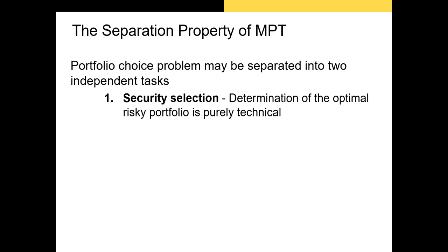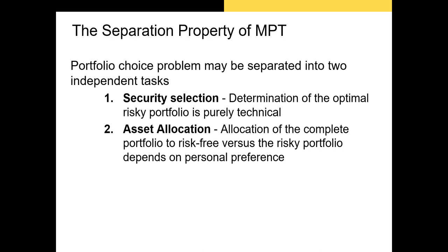We have many models for estimating expected returns and decent data to complete the security selection step, and this video primarily focuses on that first step. In the second step — the asset allocation step — we estimate the level of risk aversion of the investor and then identify the weight we allocate to our portfolio of risky assets and the weight we allocate to the riskless security, such as a T-bill.